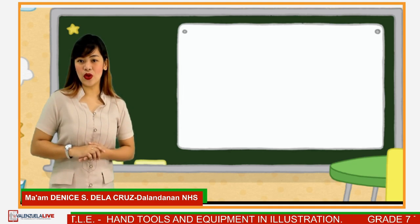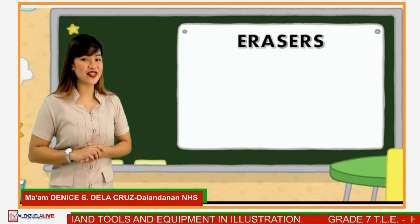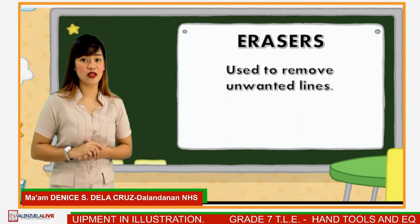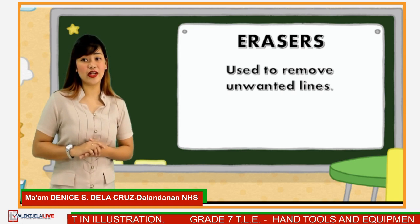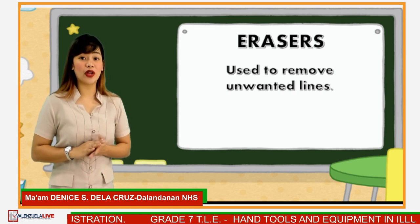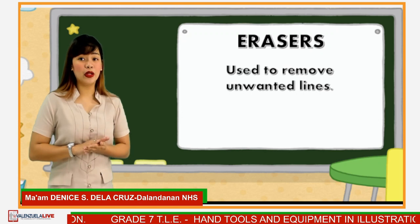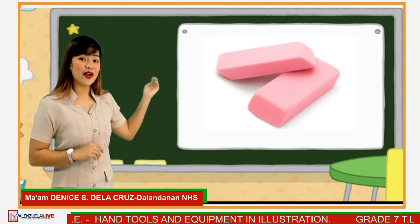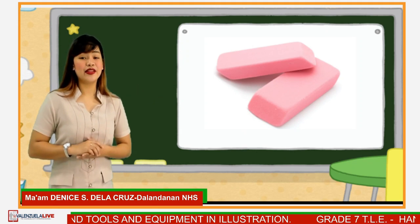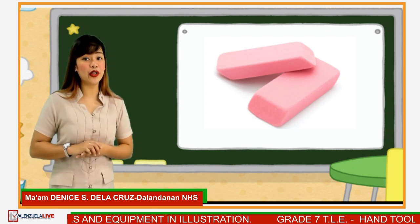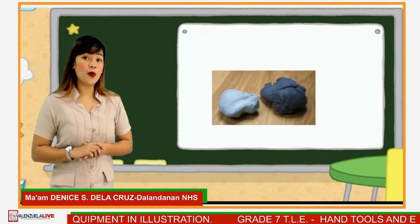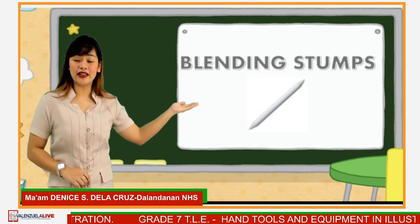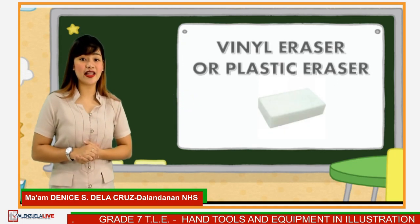Next tool is the eraser. Erasers are used to remove unwanted lines. When your eraser gets all dirty, just rub it on a table or a harsh material to clean it. Different types of eraser are used in illustration: the needle, blending, and vinyl or plastic eraser.